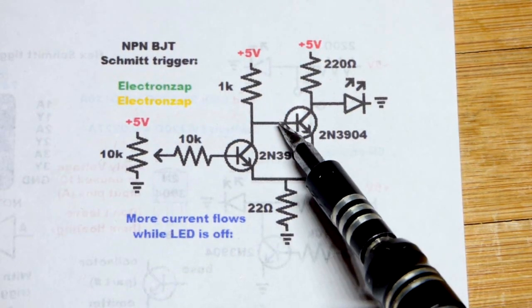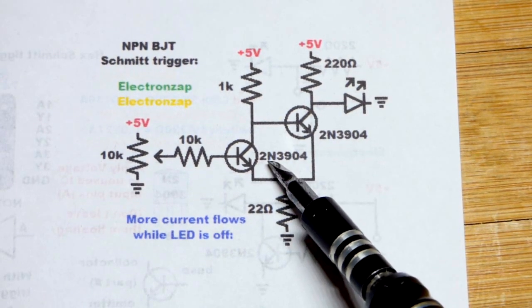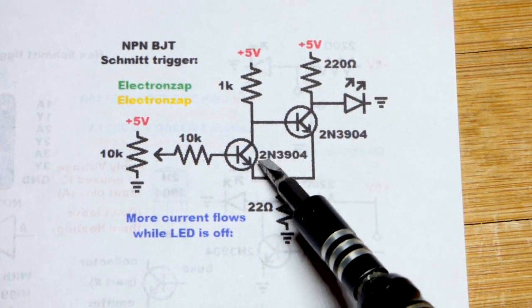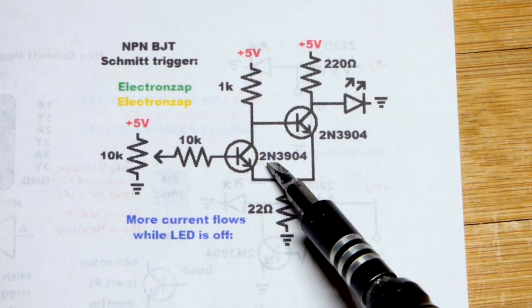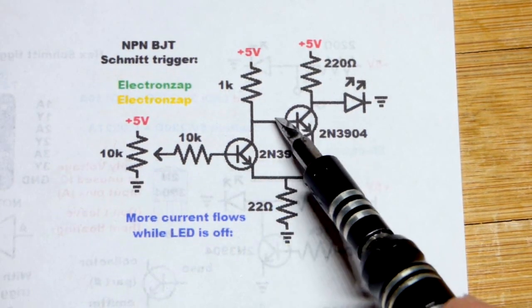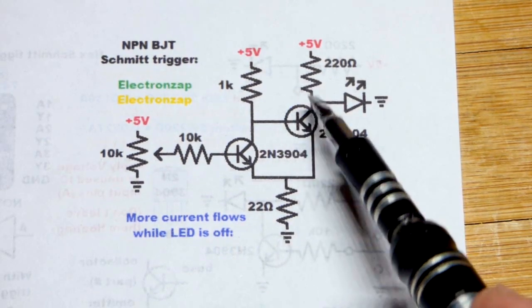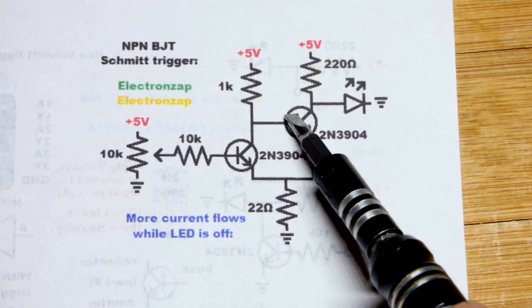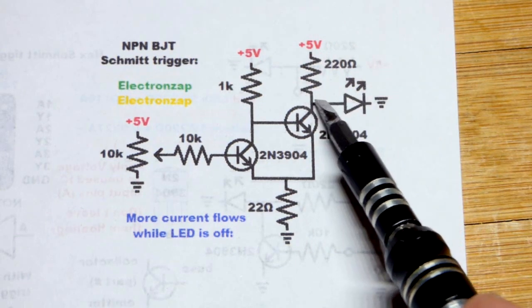We're using 2N3904s on the breadboard there. And any NPN bipolar junction transistor should work, but if it does not start with 2N, it may have a different pin layout. So in any case, that transistor's on. It connects that one to ground right there, turning this transistor off, and thus the LED will be on.